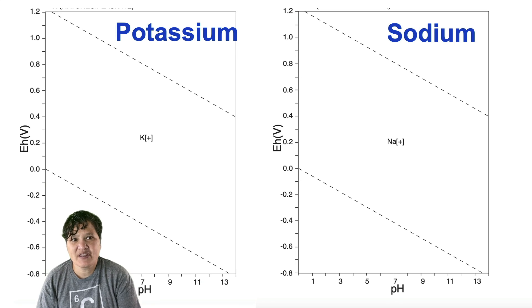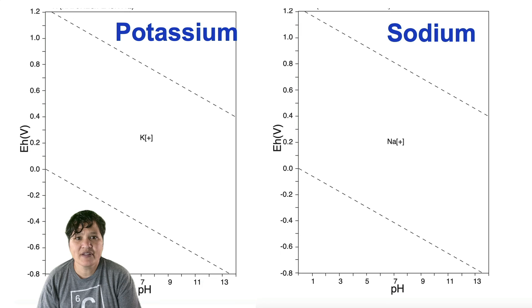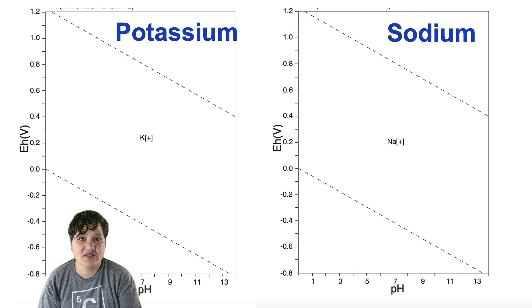I also want to point out that some elements have easier EH-PH diagrams than others. All of the alkali metals tend to exist in exactly one oxidation state, plus one. They also don't form complexes or acids, so their EH-PH diagrams contain only one species.